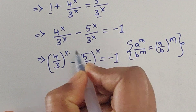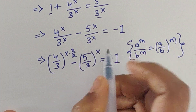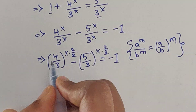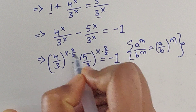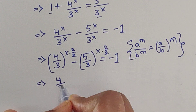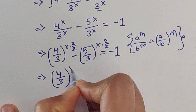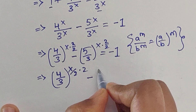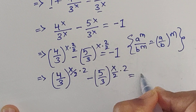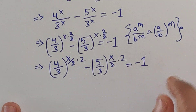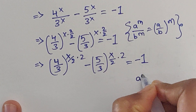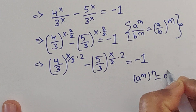Now multiply the exponent x by 2 over 2 on the left-hand side. So we can write (4/3) to the power of (x/2 times 2), minus (5/3) to the power of (x/2 times 2), equals negative 1. We can apply the formula a to the power of m, whole to the power of n, equals a to the power of m times n.